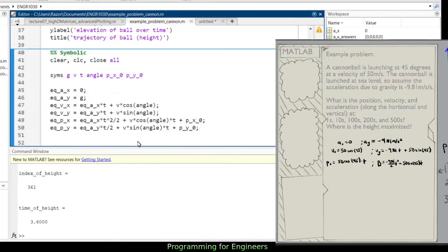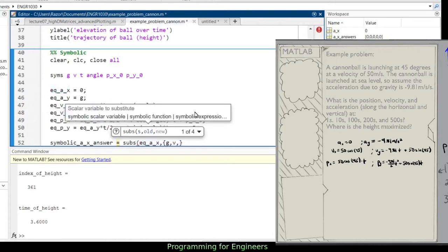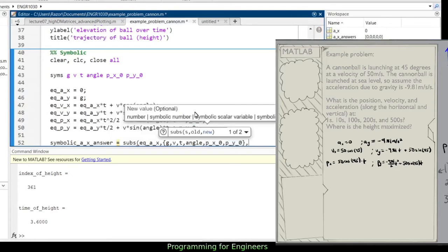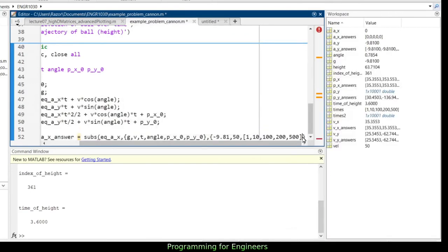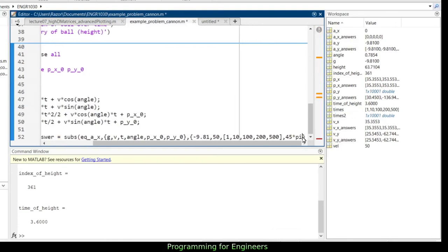And the more you do programming, the more you'll copy stuff faster and faster. So here we have all our equations. And I can apply this now. So if I wanted to figure out the times, I can just plug in equation AX. And I could say symbolic AX answer, and then this will be substituting into equation AX for G, V, T, angle, PX0, PY0. Substituting in here negative 9.81, V is 50, T is a matrix, that'll be 1, 10, 100, 200, 500.